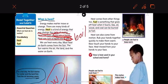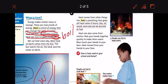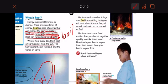Heat comes from other things too. Fuel. Fuel is something that gives heat when it burns. Gas, oil, wood, and coal can be burned as fuel.